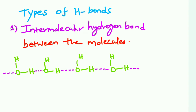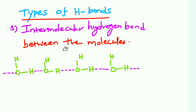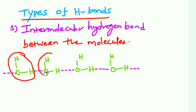So, types of hydrogen bonds — there are two types of hydrogen bonds. One is intermolecular hydrogen bonds and another one is intramolecular hydrogen bonds. Intermolecular hydrogen bonds occur between molecules. For example, water — the intermolecular hydrogen bond between water molecules. This molecule is water, and the electronegative atom is oxygen.